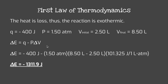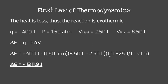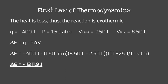Since the gas releases 400 joules it is exothermic, so q = −400 J. For work, we use delta E = q + (−P·delta V), where delta V = final − initial = 8.50 − 2.50 = 6 L. Substituting: delta E = −400 J − (1.5 atm × 6 L × 101.325 J/L·atm). The liter and atmosphere units cancel, giving a final answer of −1311.9 joules.